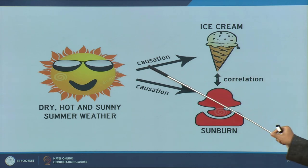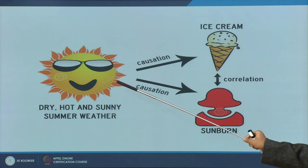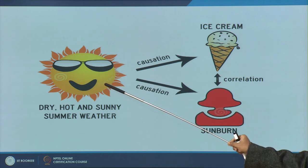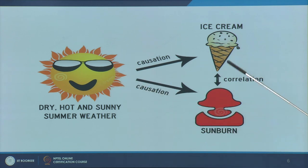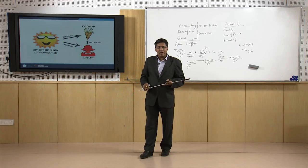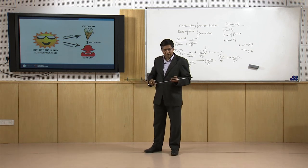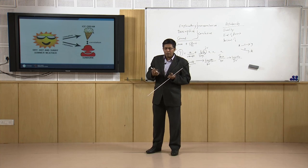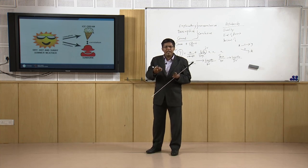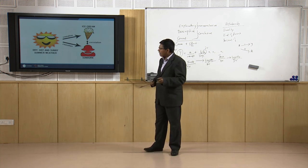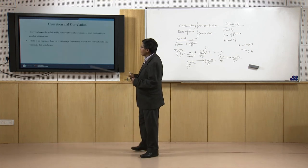Do we say that sunburn and ice cream are correlated? We need to be very clear: yes, when temperature increases, the desire to have ice cream increases, and more sunburn happens. But let us not confuse causes and correlation. The melting of ice cream is a cause of temperature and sunburn is a cause of temperature — but ice cream and sunburn are not directly causal to each other.